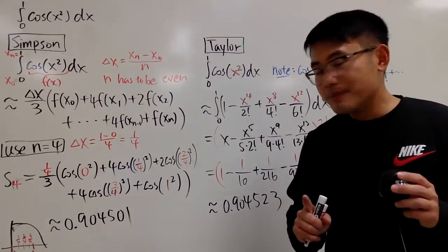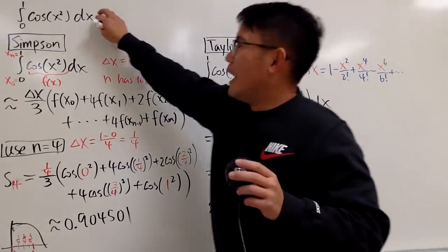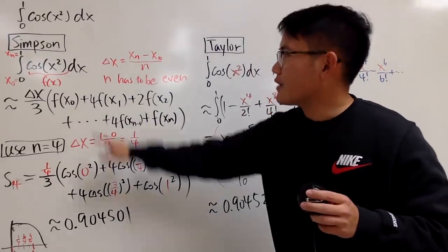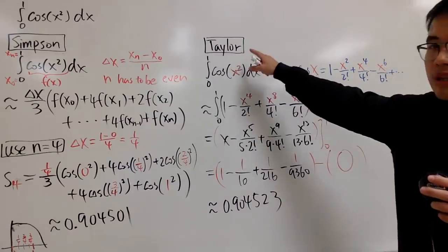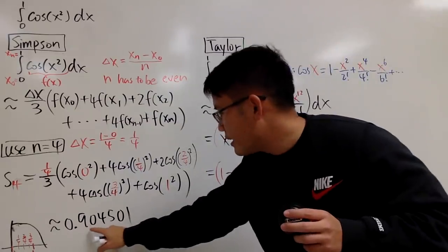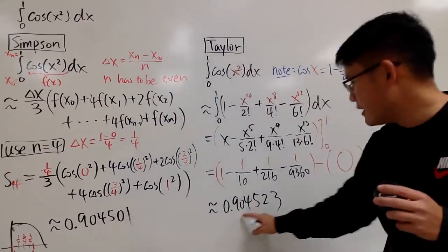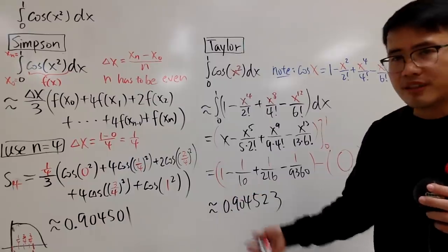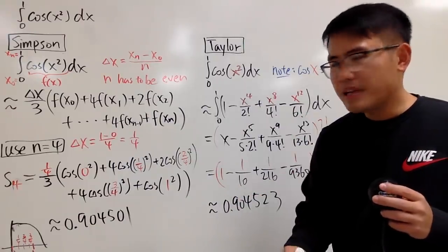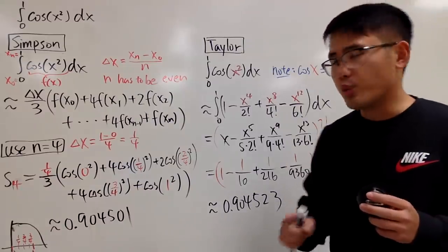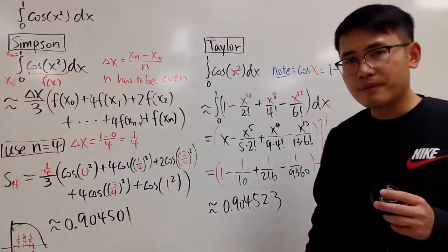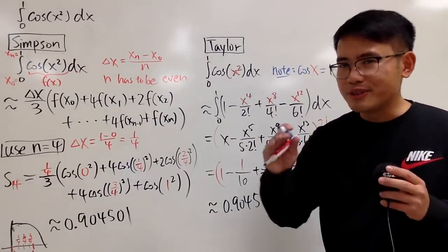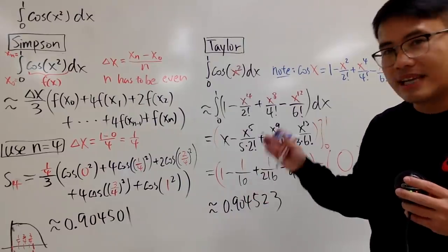Well, at the moment, I'm not telling you what the answer is by using advanced calculators or computer. This is the answer we got from Simpson's, and this is the answer from Taylor. As you can see, 9045, 9045, it's pretty close to each other. They agree to a certain degree. Leave a comment down below now and think about which one you guys think is going to win. Pause the video and think about it.